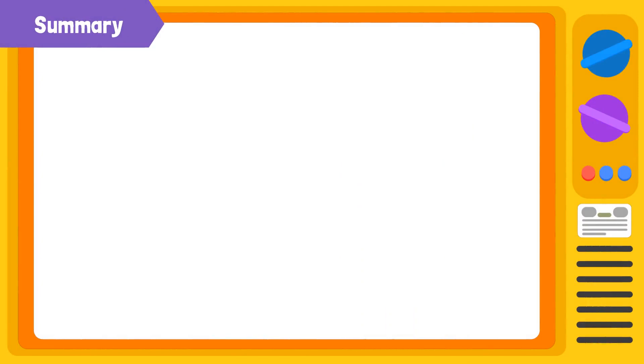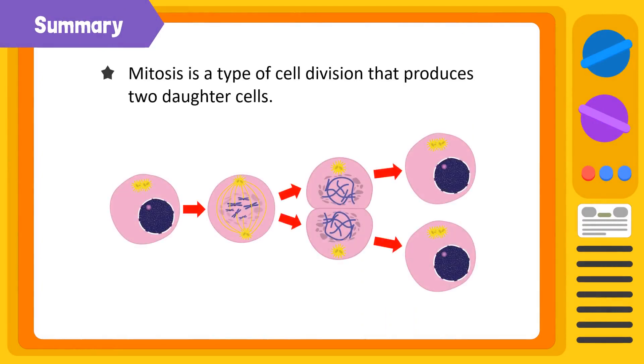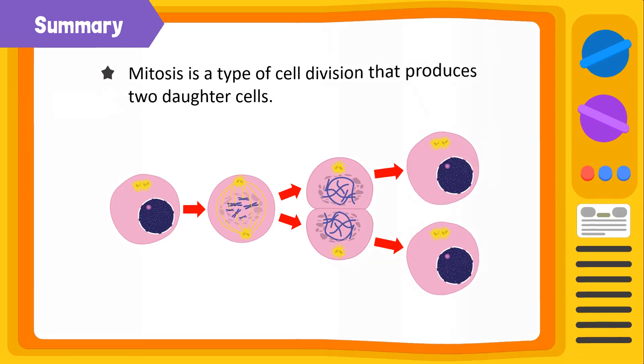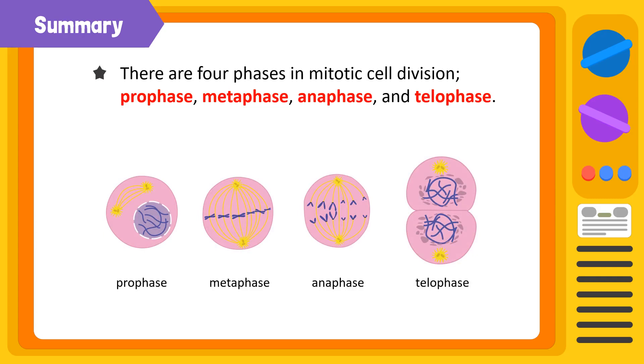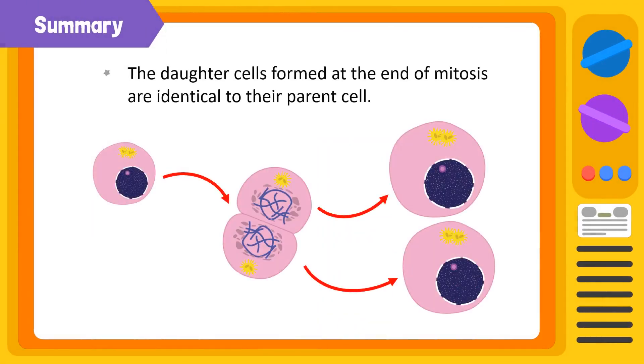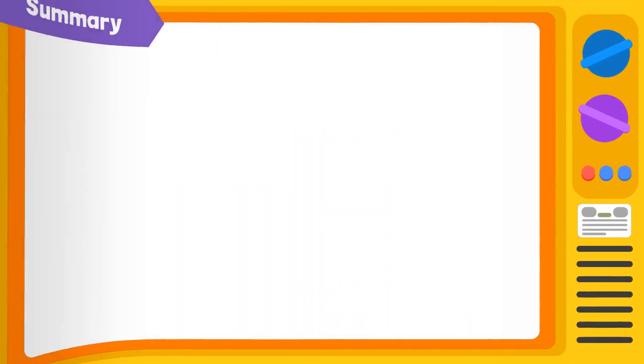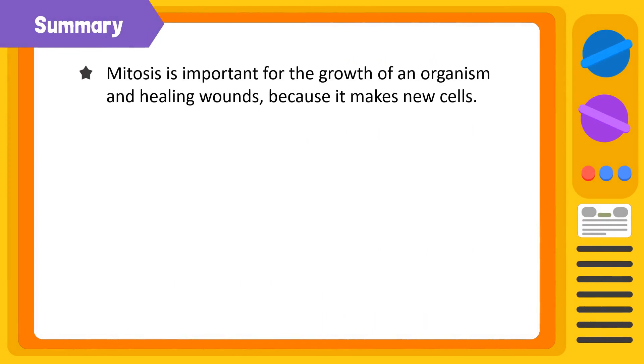Let's summarize. Mitosis is a type of cell division that produces two daughter cells. There are four phases in mitotic cell division: prophase, metaphase, anaphase, and telophase. The daughter cells formed at the end of mitosis are identical to their parent cell. Mitosis is important for the growth of an organism and healing wounds because it makes new cells.